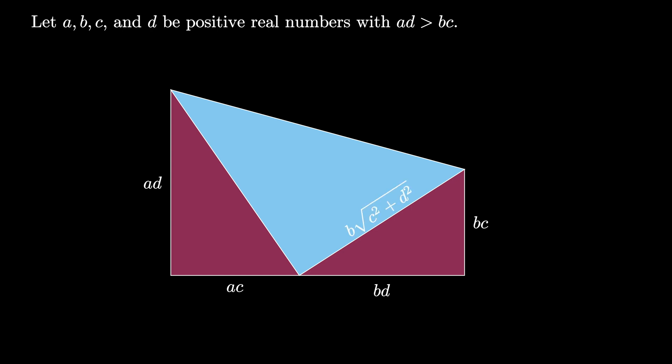The first is B times the square root of C squared plus D squared, while the second is A times the square root of C squared plus D squared. Because the first two triangles fit together along complementary angles, we know that the blue triangle is also a right angled triangle.